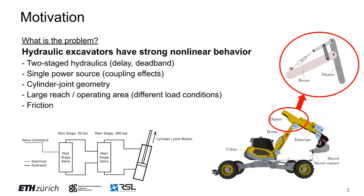So why is controlling an excavator so hard? Such excavator arms have various sources of strong nonlinearities. The hydraulic actuation has great properties like power to weight ratio and robustness, but is inherently difficult to control. Two-stage hydraulics introduce delays and dead bands. Multiple cylinders are supplied by the same oil pump, introducing coupling and saturation effects depending on how many joints are moved simultaneously and at what velocity.